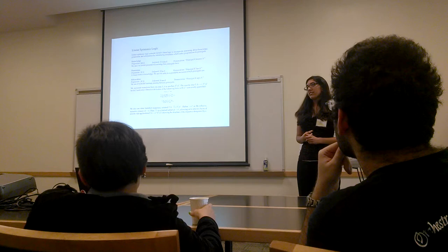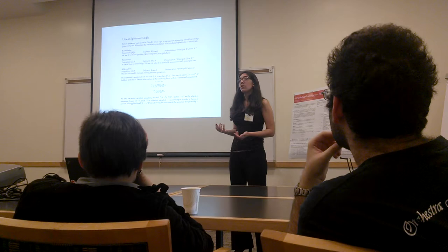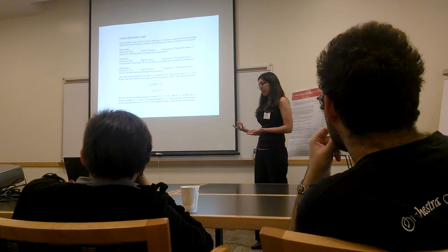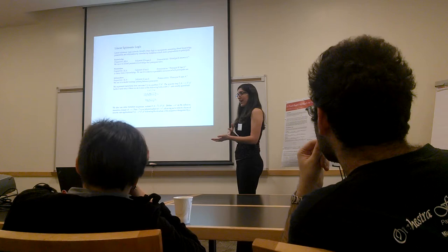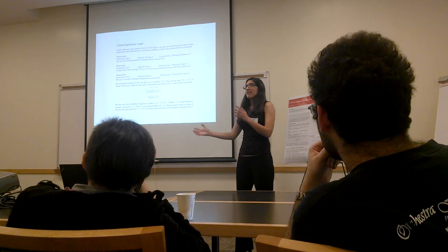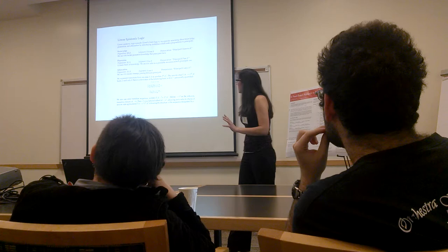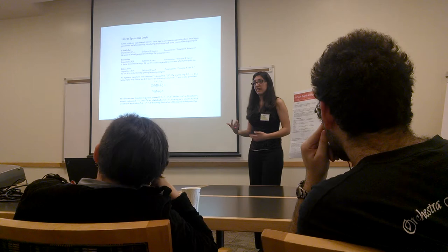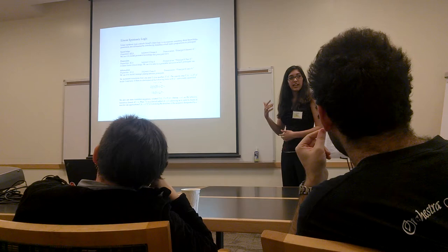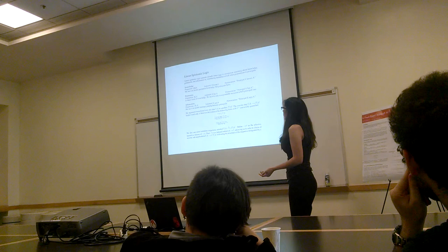Linear epistemic logic is an extension of linear logic, which is a logic that treats facts as consumable resources. So if at time t you have a dollar and the ability to purchase a sprite, then at time t+1 you should have traded that dollar and ability to purchase for a sprite — you shouldn't still have the dollar. The facts that you have change. Linear logic inherently supports a notion of state and changing states. Linear epistemic logic is the same sort of state transition logic, but with an extension of knowledge, possession, and affirmation. We call these modalities.